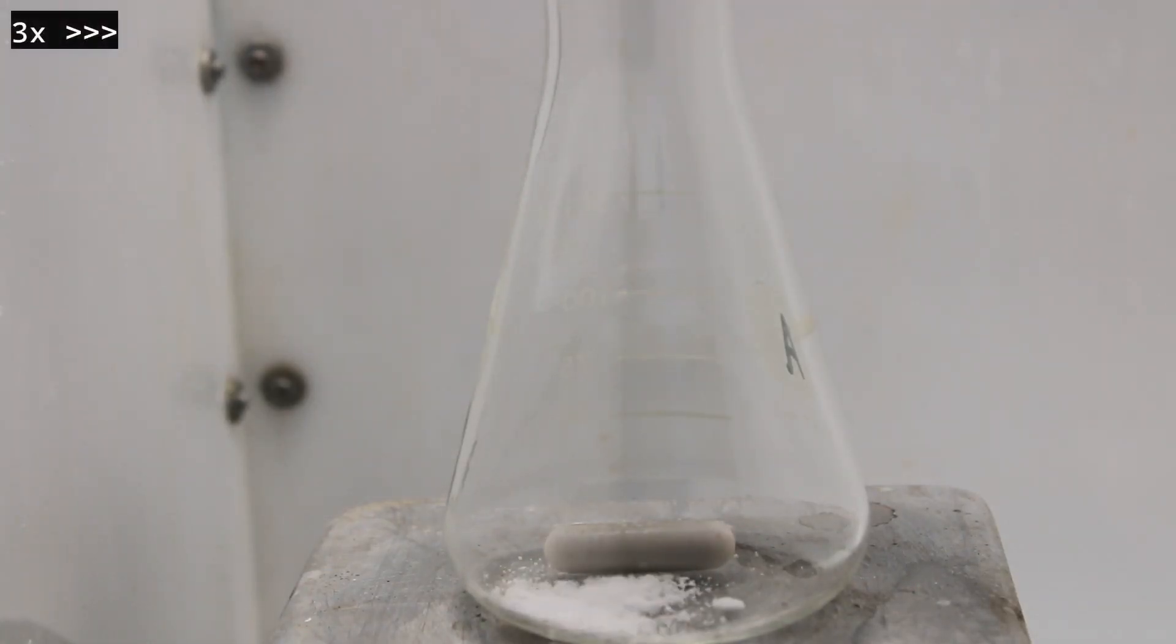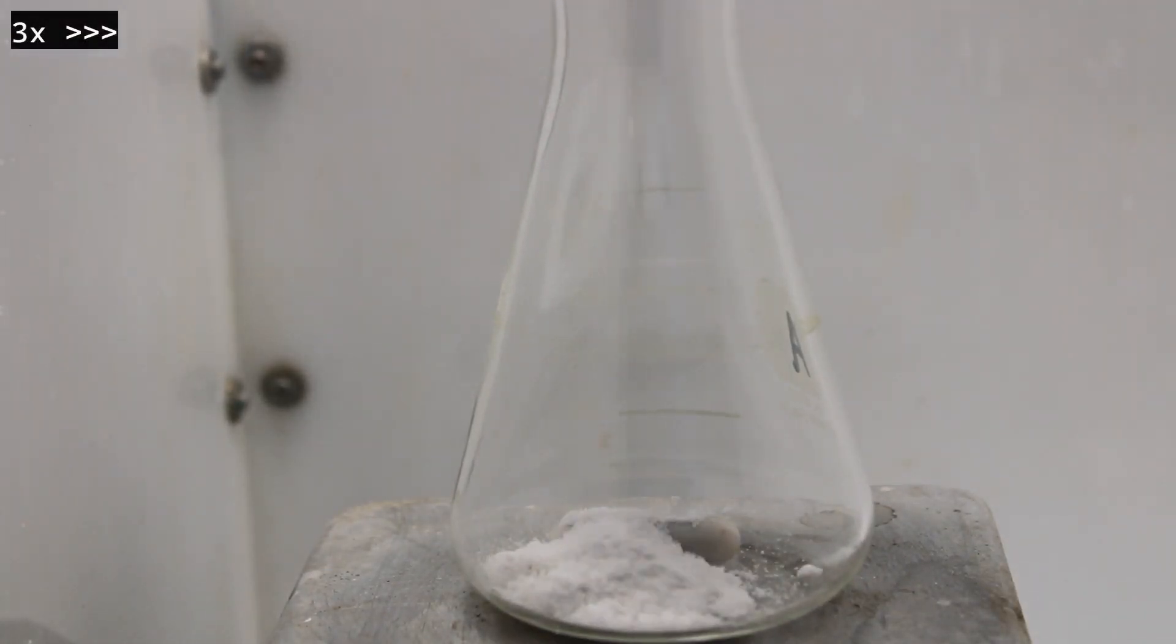Then, 8 grams of potassium cyanate were dissolved in 20 milliliters of hot distilled water. The mixture was stirred and heated until everything dissolved.